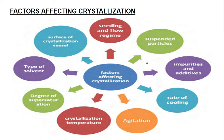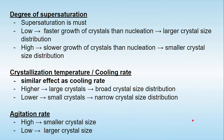The most important factor affecting the crystallization process is the degree of supersaturation. As explained in the introduction video, supersaturation is a must for crystallization. Crystallization takes place in three parts: primary nucleation, secondary nucleation, and crystal growth. If the degree of supersaturation is low, faster crystal growth will take place compared to nucleation, leading to a larger crystal size distribution. If the degree of supersaturation is high, nucleation will be faster than crystal growth, leading to a smaller crystal size distribution.